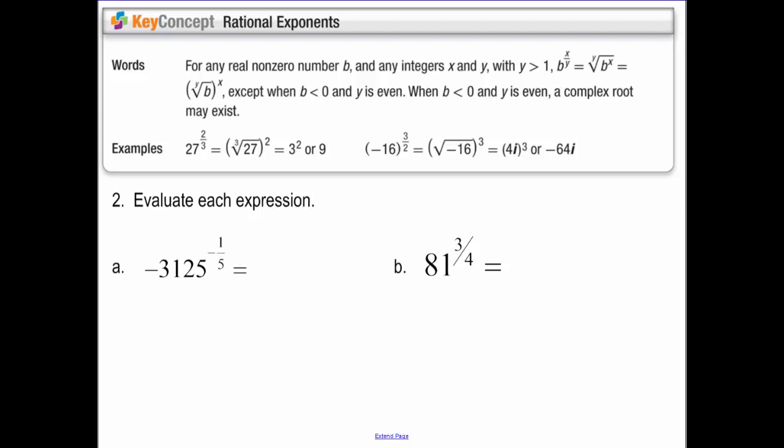Now simplifying. There's really two ways you can think about this. So in this 27 to the 2/3 power, what they did is they chose to do the cube root of 27, because that's going to make that a smaller number.